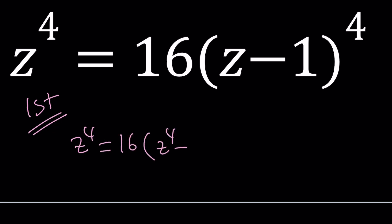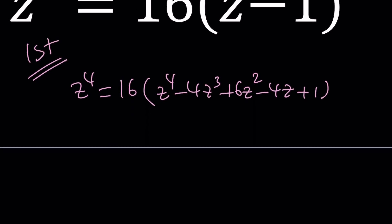z to the fourth minus 4z cubed plus 6z squared. By using the binomial theorem, I can go ahead and expand z minus 1 to the fourth power, and this is what I get. And then after distributing the 16z to the fourth, and then subtracting z to the fourth, I can put everything on the same side.